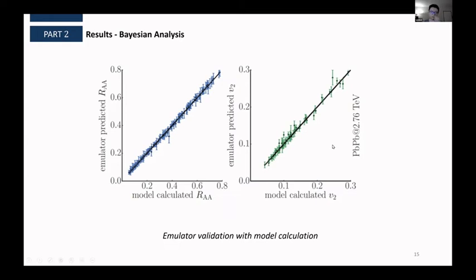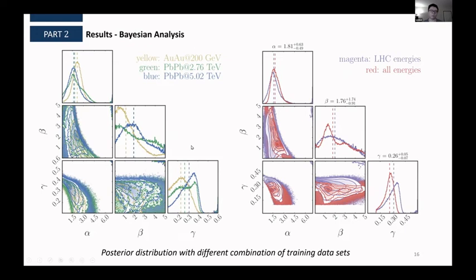So with everything in hand, we can now perform our Bayesian analysis. So on the left-hand side, this is our extracted posterior distributions for those parameters using different experimental data. So we have gold-gold at 200 GeV and lead-lead at two different collision energies. And you can see, we don't have a very good extraction for the beta and gamma parameters. However, when we combine those experiments, for example, we combine the LHC energy experiments, the two, the green and the blue ones, or we combine all three experiments, we have a better constraints on those parameters.